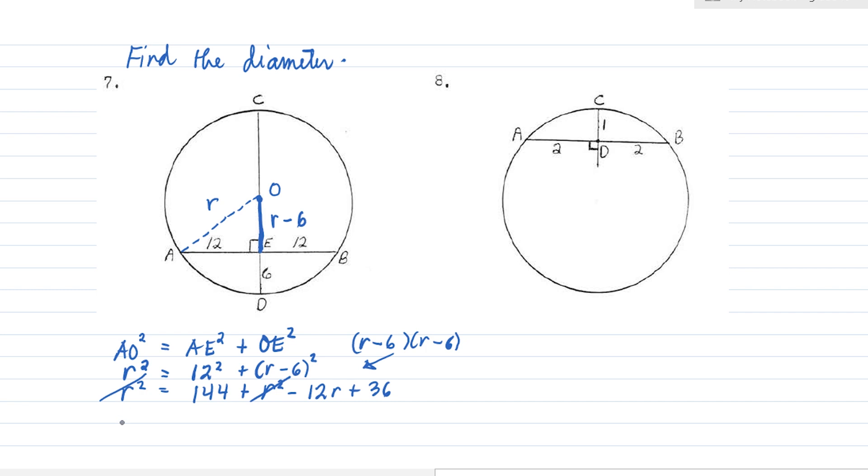Then, let's move this 12R to the left side. So we have 12R equals 144 plus 36. That is 180. And we divide everything by 12. Therefore, R equals 15.